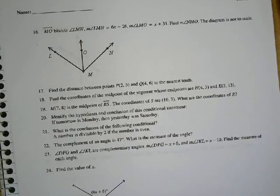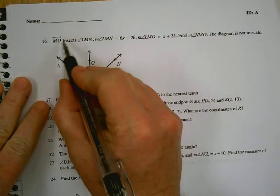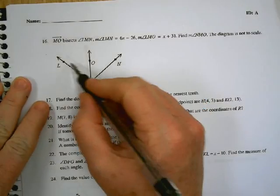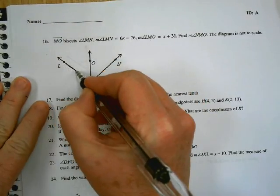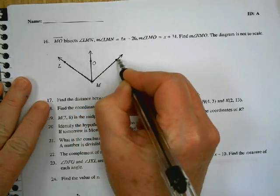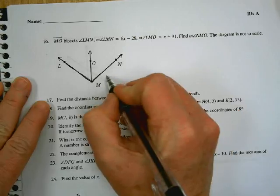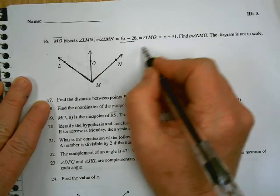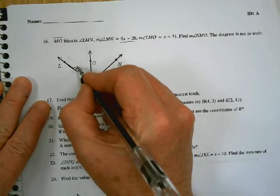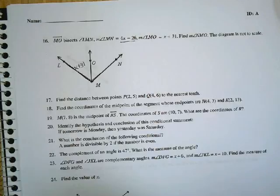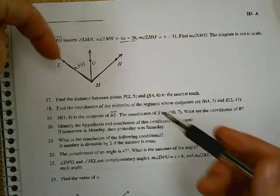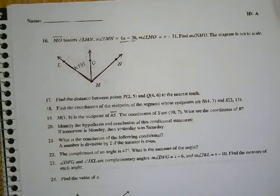16. Pretty much the same question. They've changed a little bit of it. It tells us that MO bisects LMN. Now this time they're telling me LMN, which is the whole thing, is 6x minus 26. LMO is x plus 31. What's the relationship between the big angle and one of the little angles? Are they the same size? No.